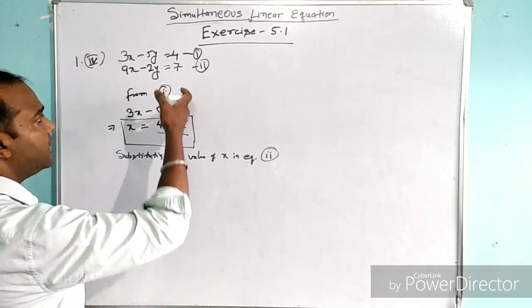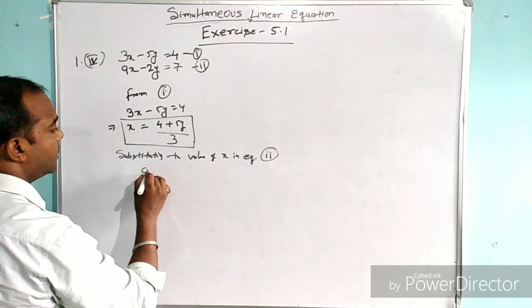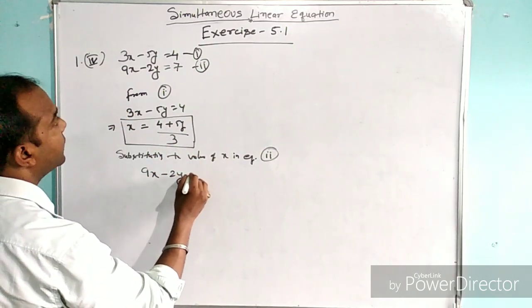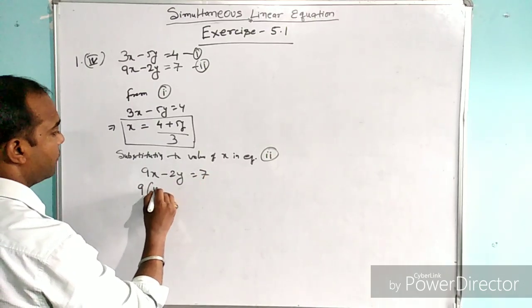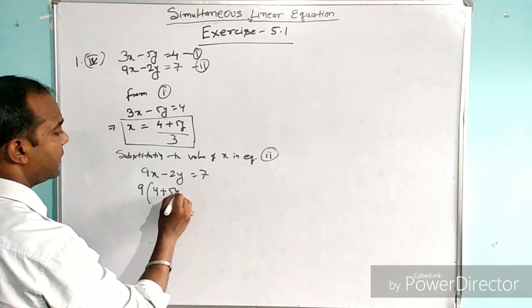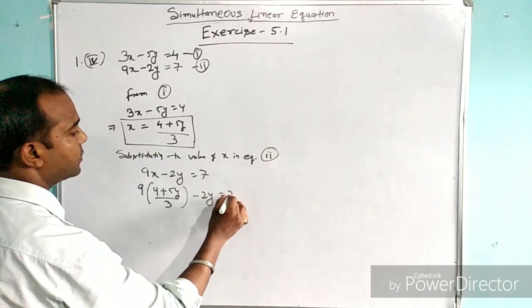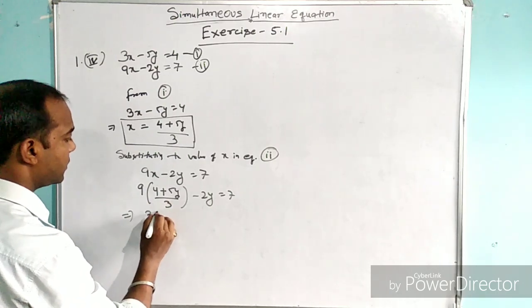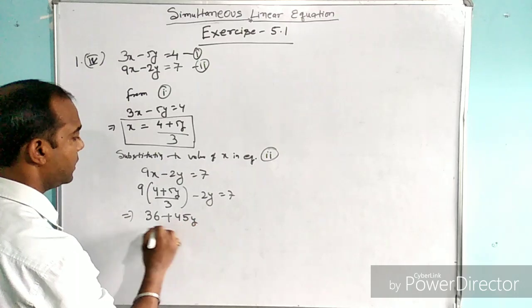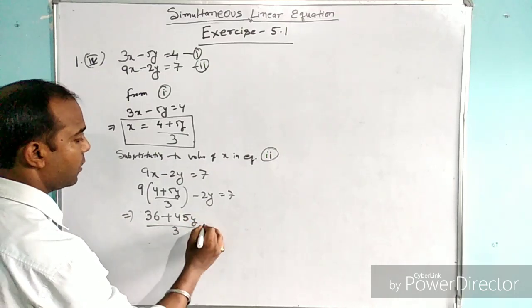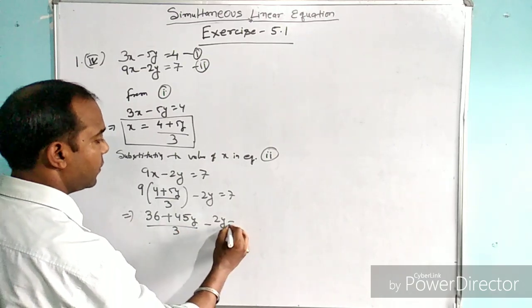So I have equation 1 and equation 2. We have equation 2: 9x minus 2y equal to 7. So we will put the value of x, which is (4 plus 5y) divided by 3, giving us 9 times (4 plus 5y) over 3 minus 2y equals 7. After multiplication, this gives 36 plus 45y over 3 minus 2y equals 7.